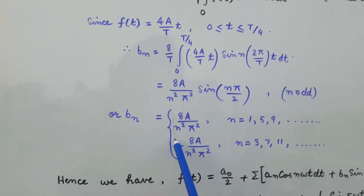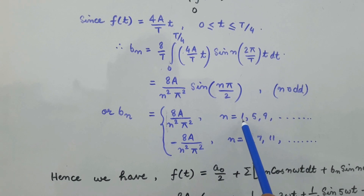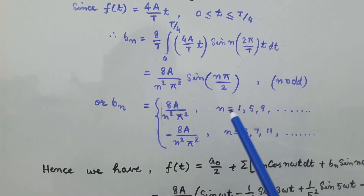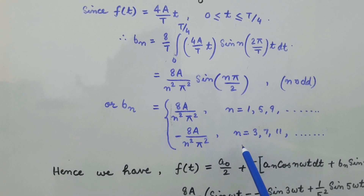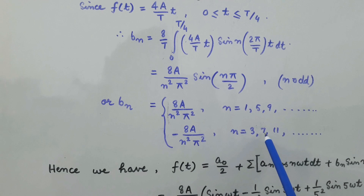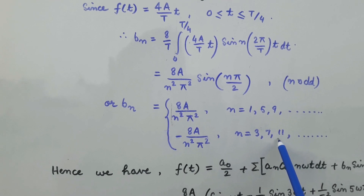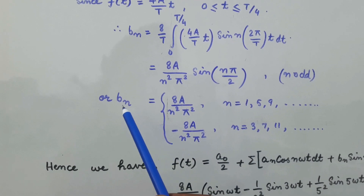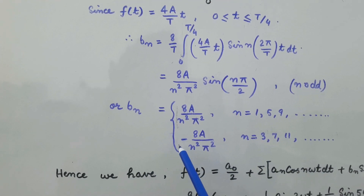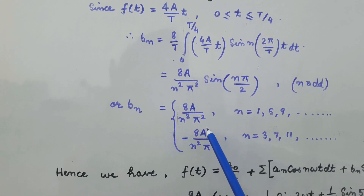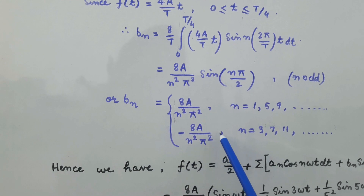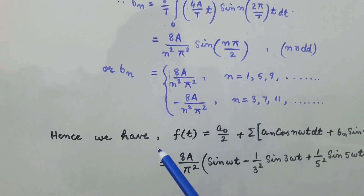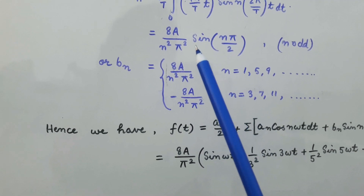On substituting the various odd values of n, we find that b_n = 8a / (n²π²) when n = 1, 5, 9, and so on. Similarly, if we substitute n = 3, 7, 11, 15, and so on, then the value of b_n will be equal to negative 8a / (n²π²).